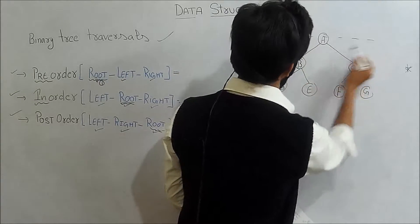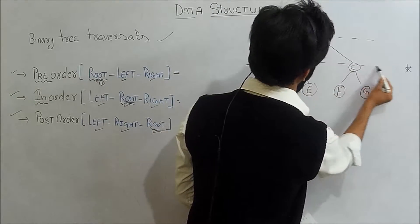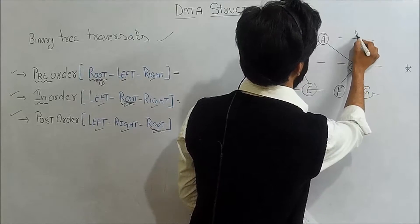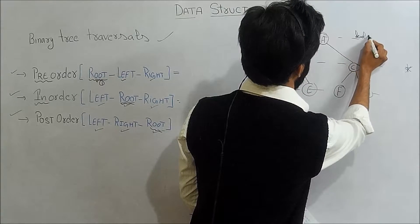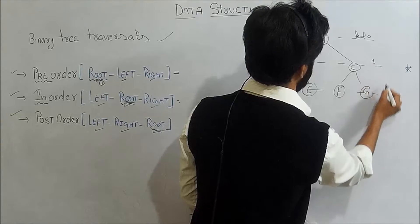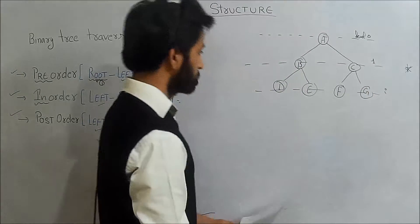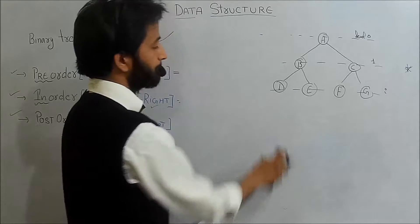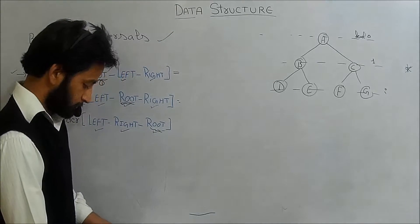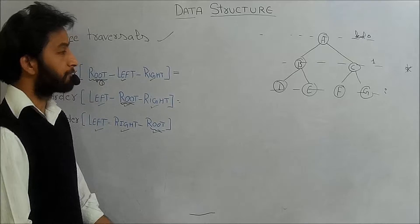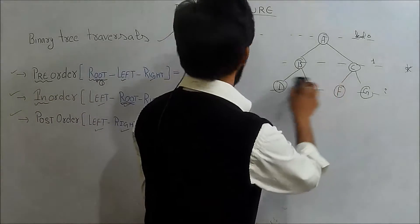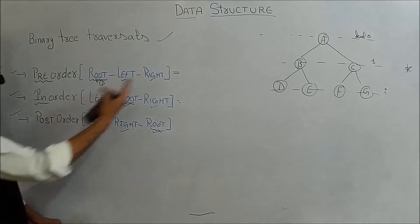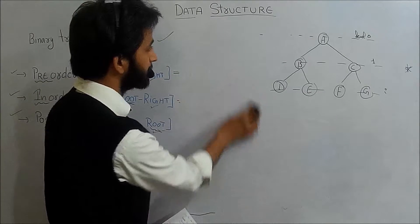We can divide this tree into levels: level 0, level 1, and level 2. Now I will find the pre-order, in-order, and post-order traversals of this given binary tree.